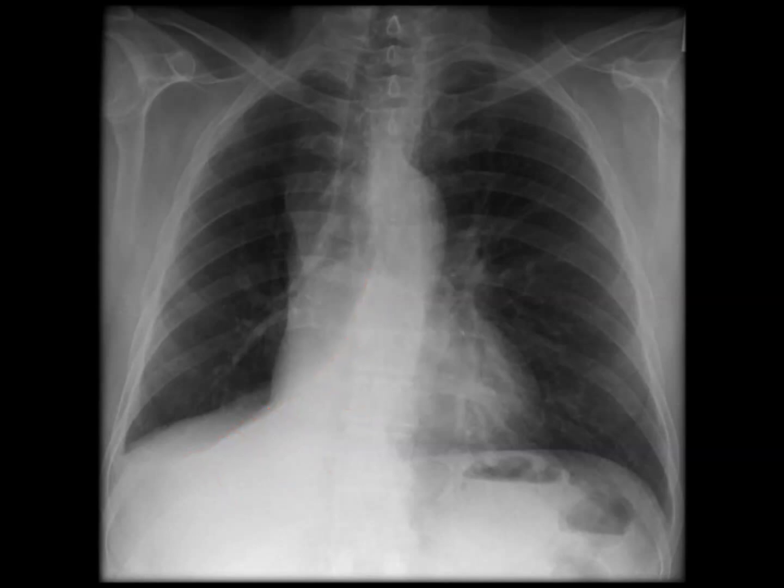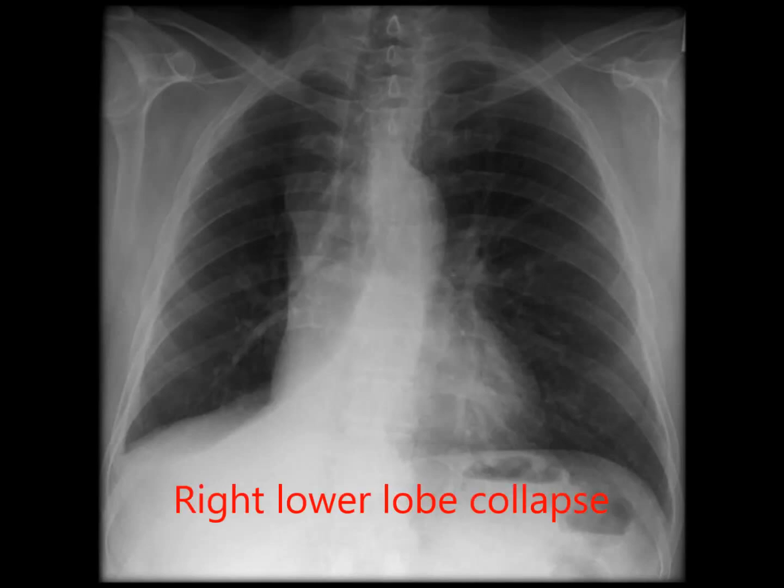Putting all this information together: the silhouette sign at the right hemidiaphragm suggests a right lower lobe problem. The asymmetry of the lungs and right-sided deviation of the trachea and mediastinal structures suggests a reduction in right lung volume. Add to this the area of opacification with absent lung markings, and you have a classic picture of a right lower lobe collapse.